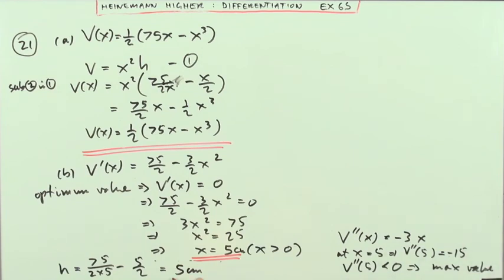So we've got a maximum volume when the length, the breadth and the height are all 5. In other words, when it's a cube.